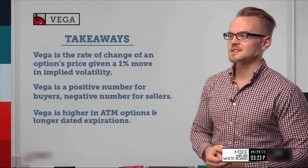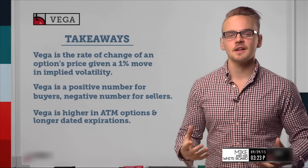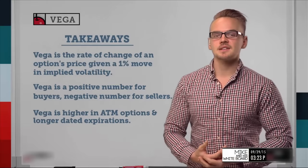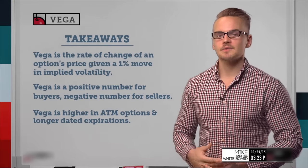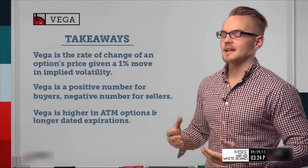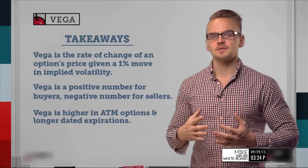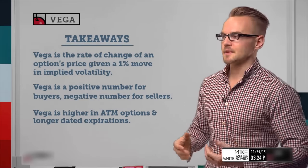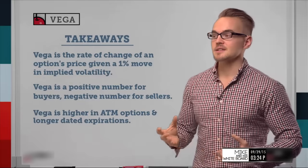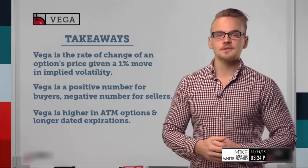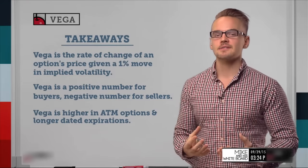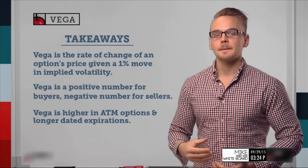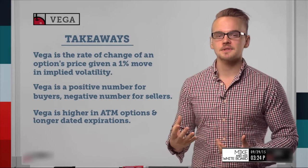To recap the takeaways: Vega is the rate of change of an option's price given a one percent move in implied volatility — just like delta measures stock price sensitivity, Vega measures implied volatility sensitivity. Vega is a positive number for buyers and a negative number for sellers, which is why your platform shows negative Vega for credit spreads or sold naked options, and positive Vega for debit spreads or long options.